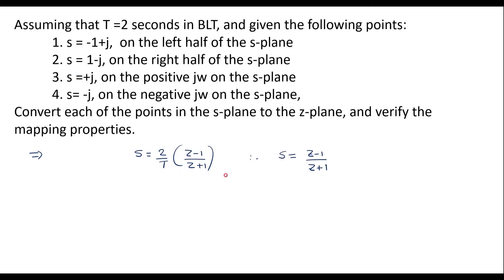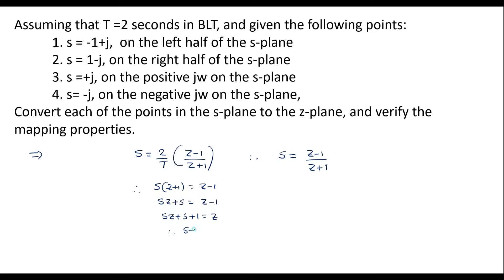Since s values are given, from this equation I can rearrange: s times (z plus 1) equals z minus 1, which gives s·z plus s plus 1 equals z. Therefore, rearranging, we get z equal to 1 plus s divided by 1 minus s.